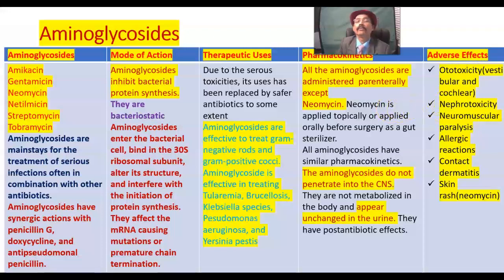Nephrotoxicity: aminoglycosides may damage the proximal tubular epithelium of the nephron. In toxic doses they may cause renal tubular nephrosis. Precautions should be taken when this drug is combined with other nephrotoxic drugs such as furosemide, ethacrynic acid, bumetanide, or cisplatin.